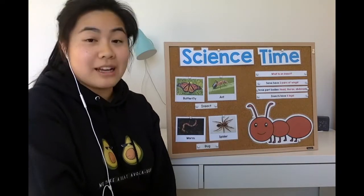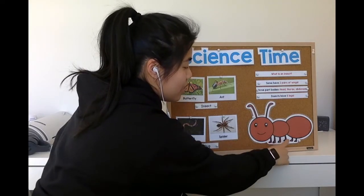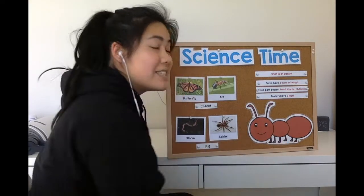And insects also have six legs, so if we count there's one, two, three, four, five, six legs.